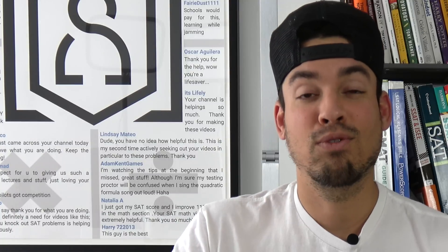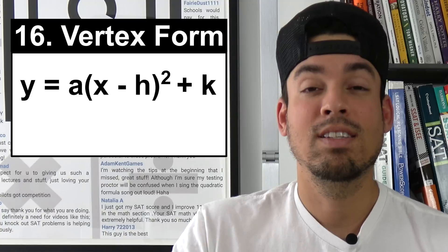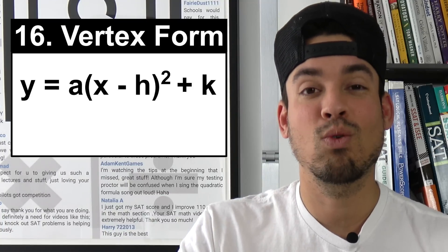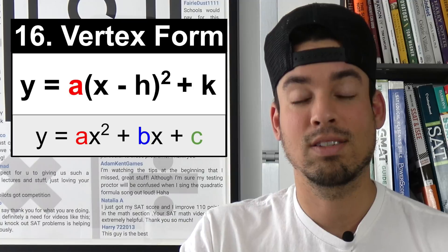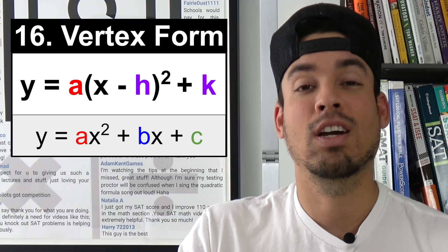Next on the list is vertex form of a parabola. This is a great formula to have in your back pocket because if you see a quadratic function presented in this format you can quickly see where the vertex is. The vertex is at h comma k.